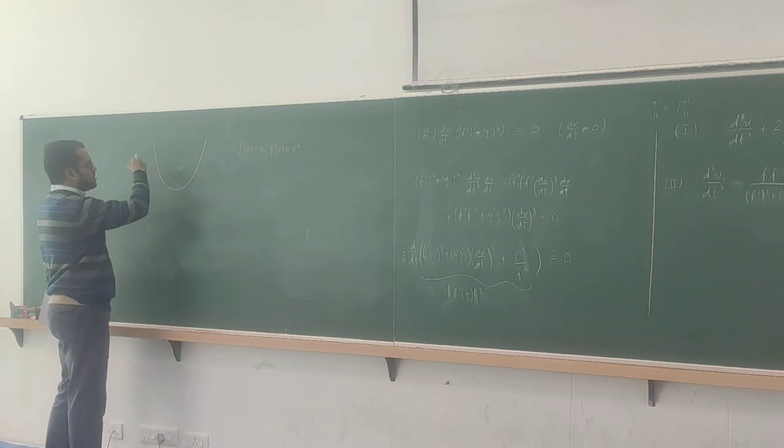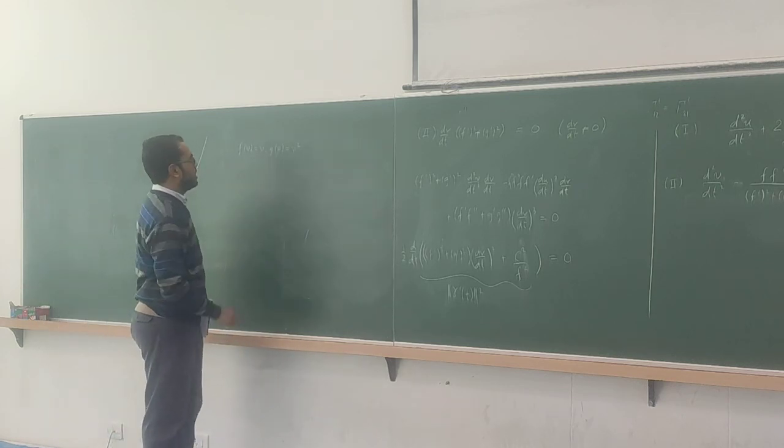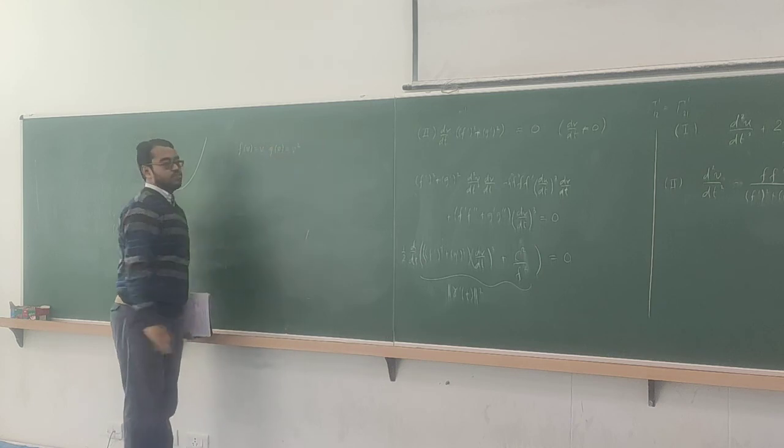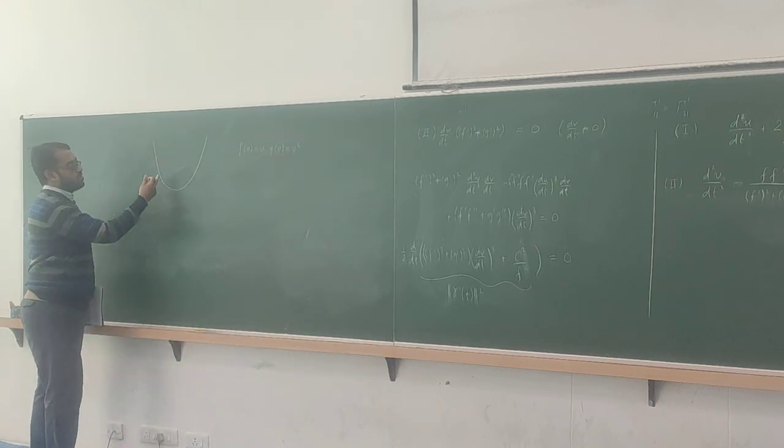But we will ignore that because this is a valid surface and all the other things that we did actually will work in this setting, so namely f prime square plus g prime square is of course 1. So what is this object, this is simply what's called a paraboloid, because you take a parabola and then it rotates.